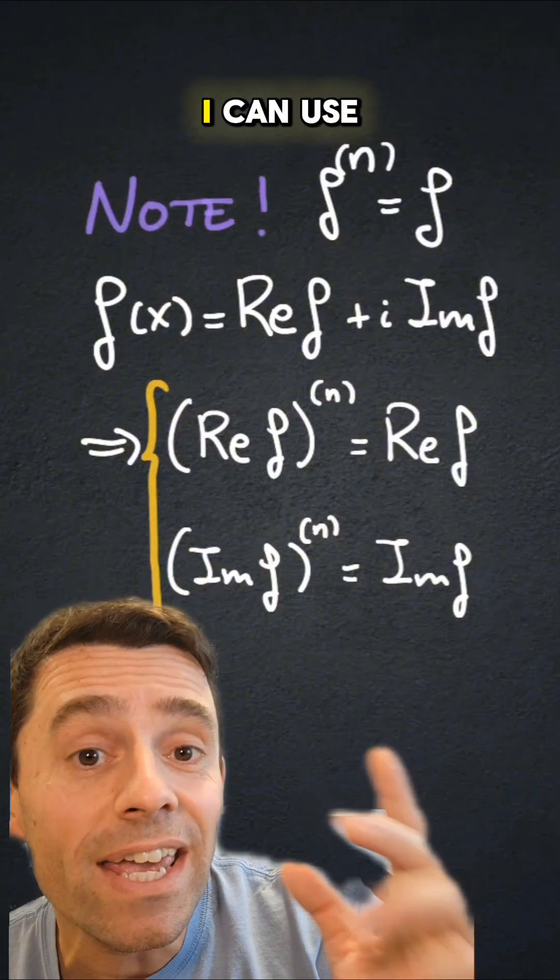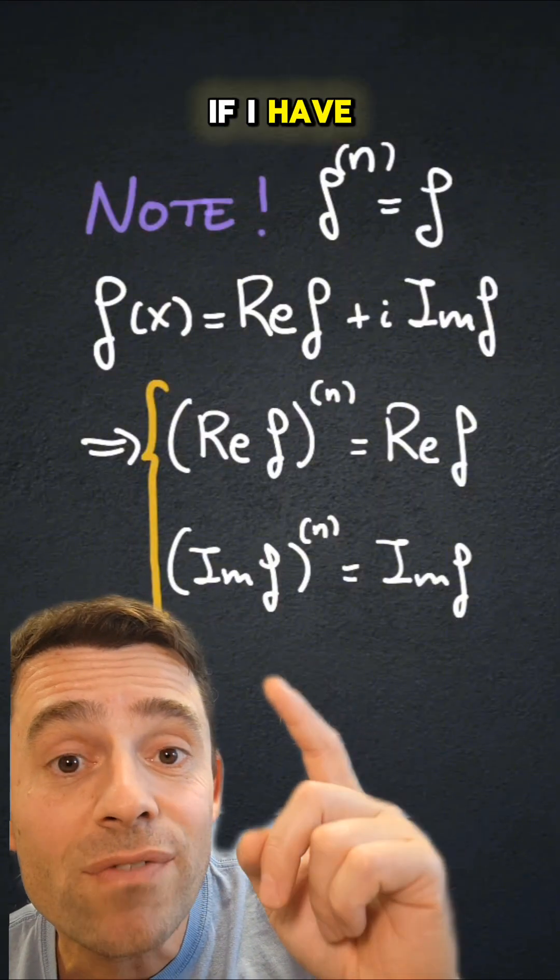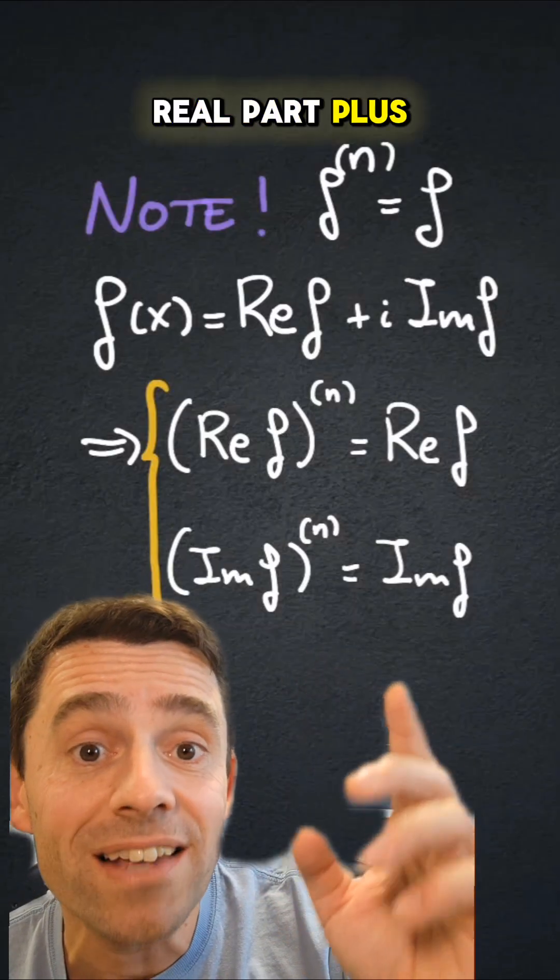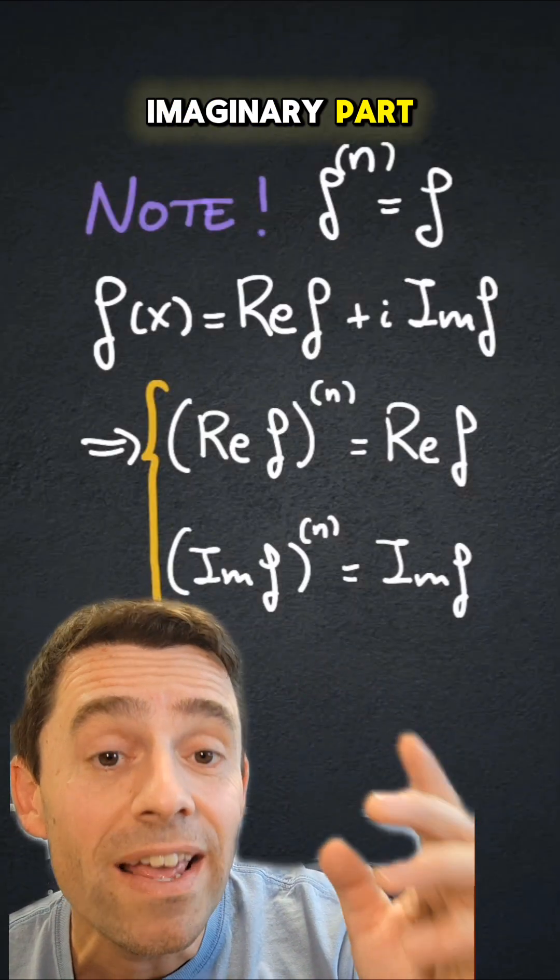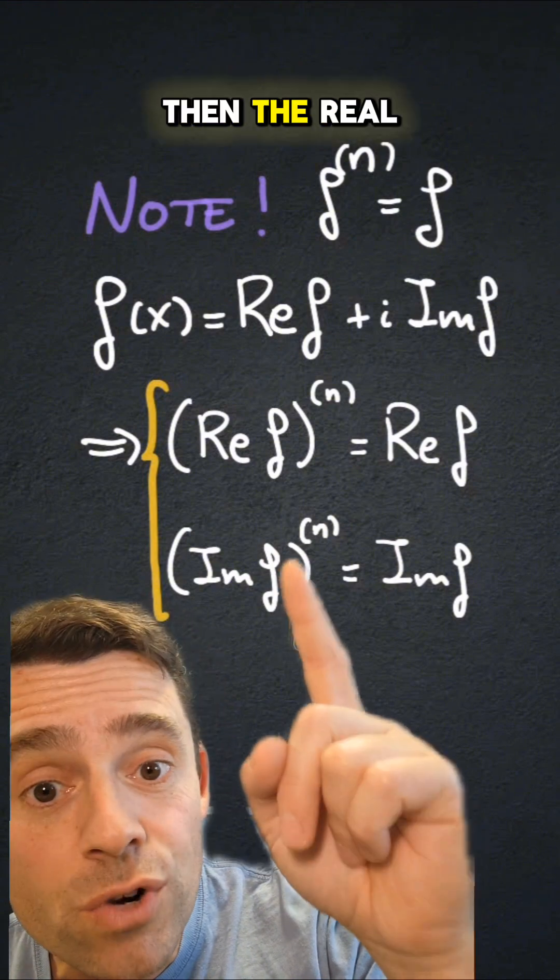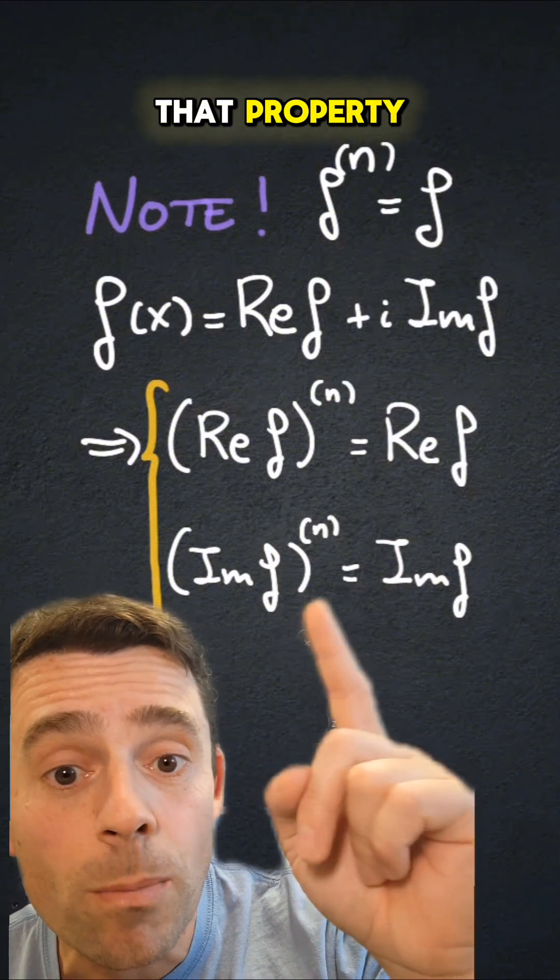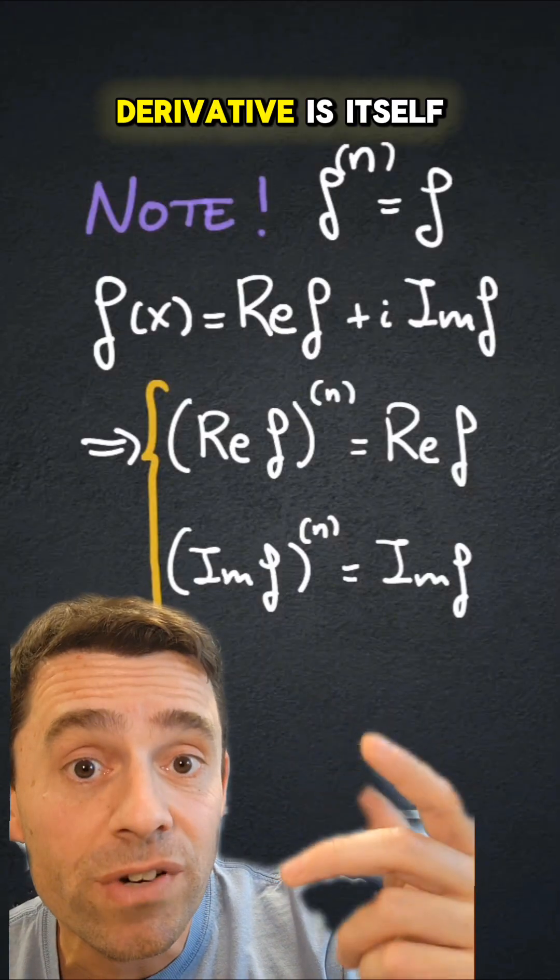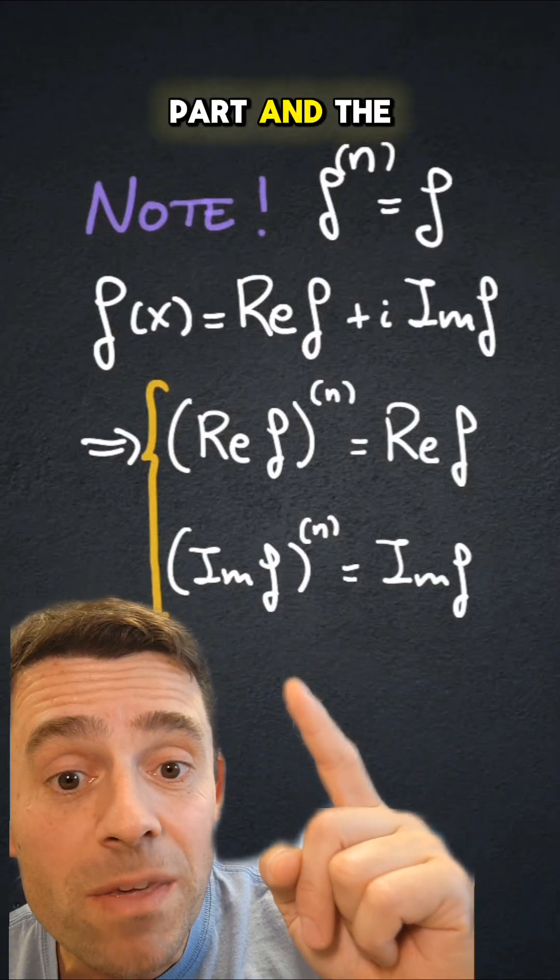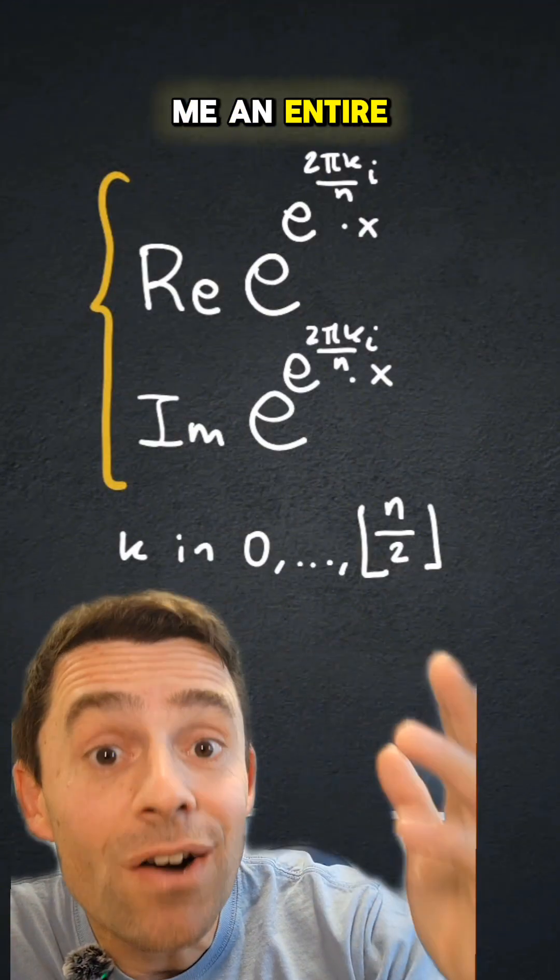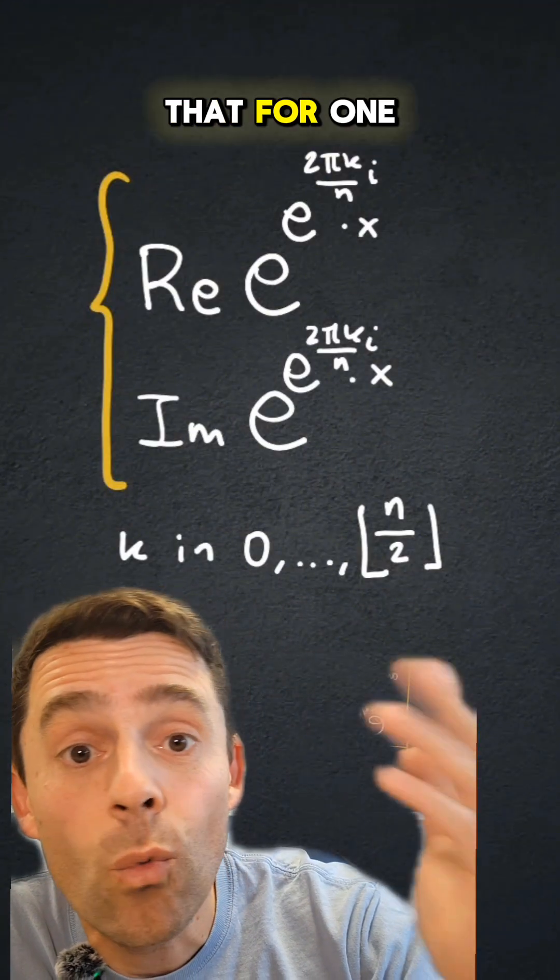And the answer is yes because I can use the following trick. If I have a complex valued function f, I can break it as the real part plus i times the imaginary part. If the nth derivative of f is equal to f, then the real part also has that property and the imaginary part also has that property that the nth derivative is itself. But the real part and the imaginary part are real valued functions.